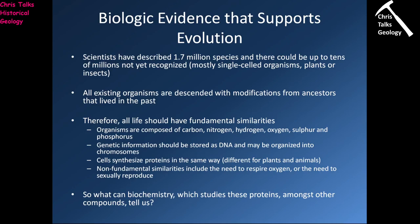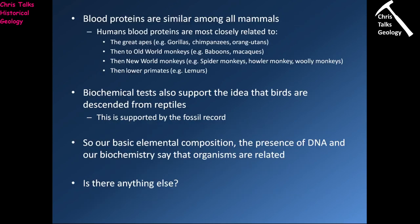What can biochemistry tell us about how closely or distantly related we are to other organisms? When we look at human blood proteins and compare them to the primates, we can begin to see how closely or distantly related we are. Based on blood protein chemistry, we are most closely related to the great apes — gorillas, chimpanzees and orangutans. We are slightly more distantly related to the old world monkeys like baboons, even more distantly related to the new world monkeys like spider monkeys and howler monkeys, and most distantly related to the lower primates such as lemurs. Comparing blood proteins is a very simple and efficient method of showing us which organisms we are most closely and distantly related to.